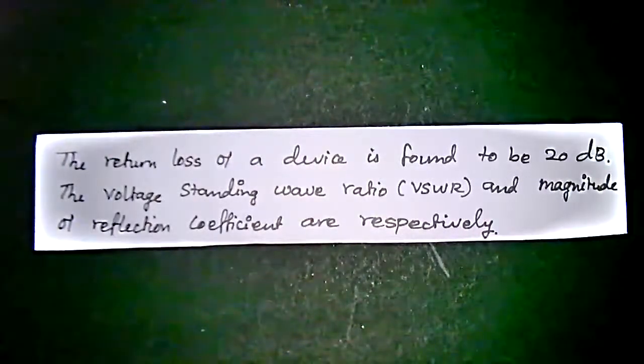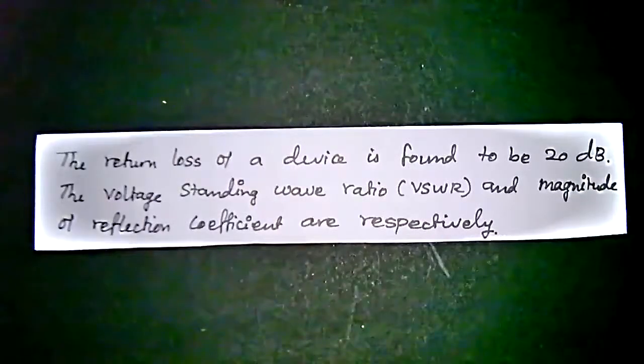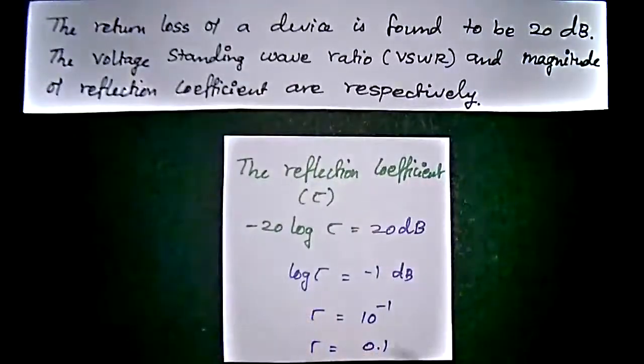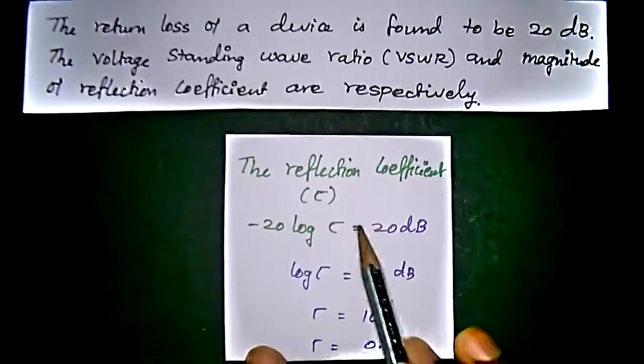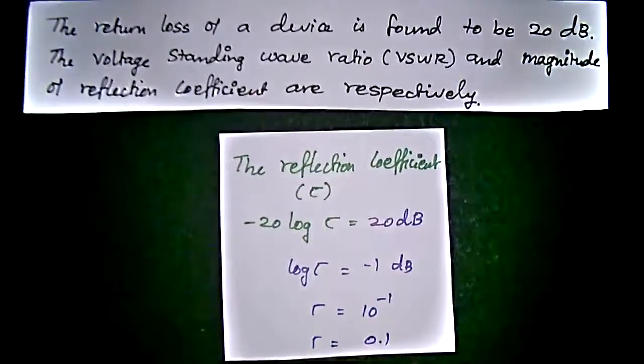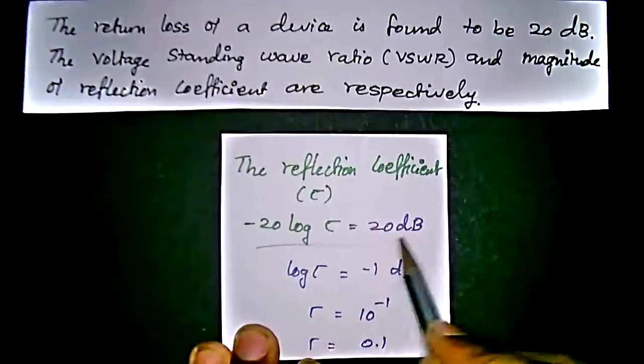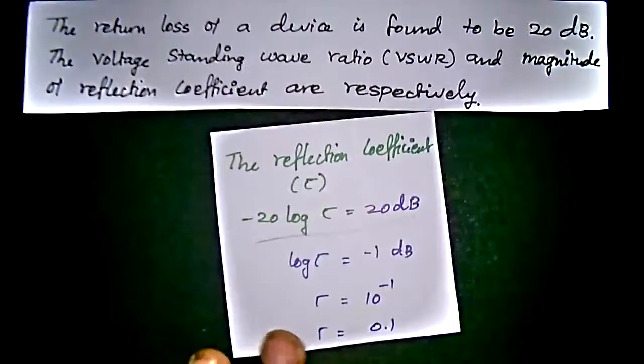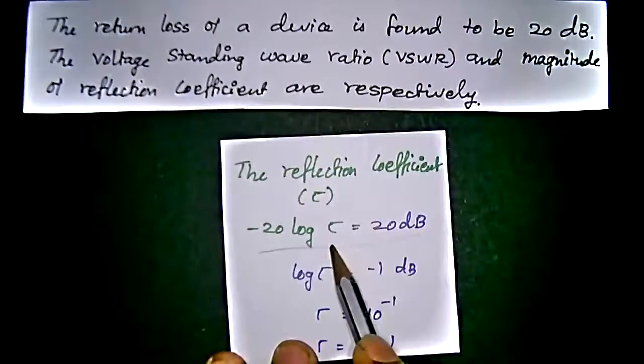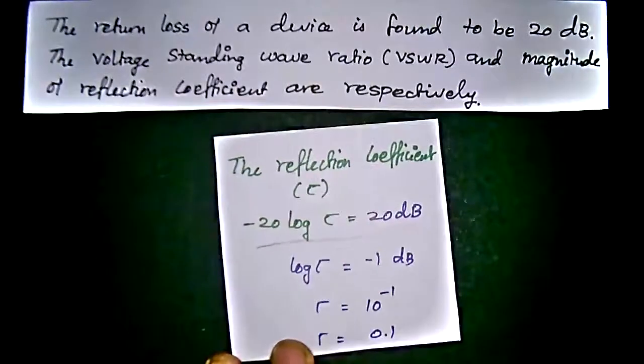The reflection coefficient is denoted as tau. So, the return loss can be written as minus 20 log tau. This return loss can be written as minus 20 log tau, that is, this tau is reflection coefficient equal to 20 dB.